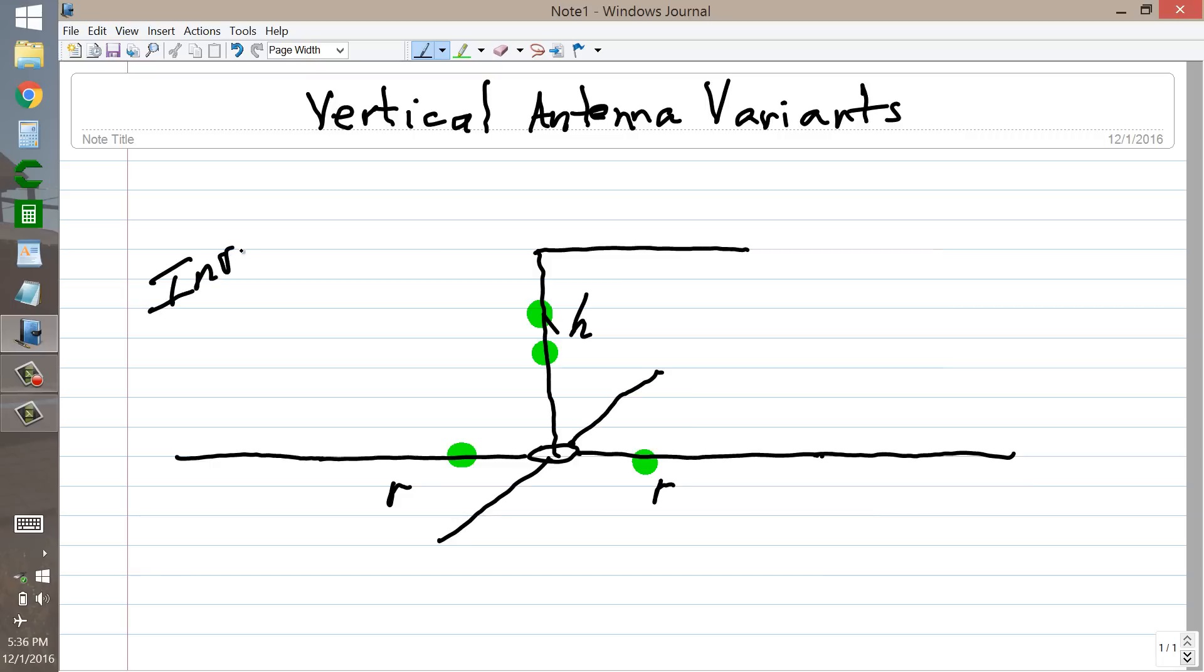But this you might call an inverted L, because the radiating part of the antenna is shaped like an upside down L. As you can see, that's a continuous length of wire right there. Your inverted L.